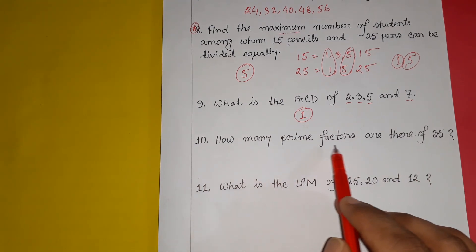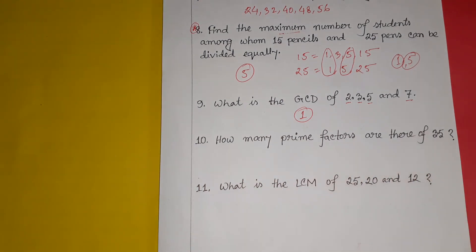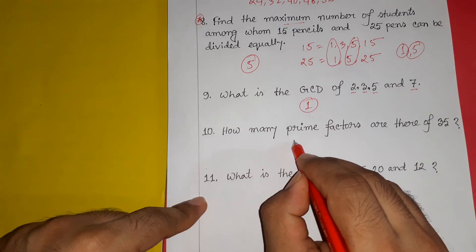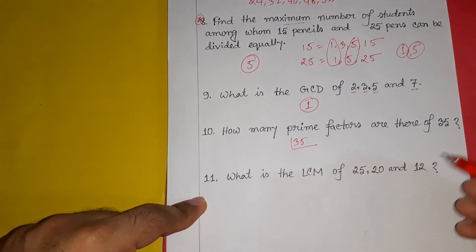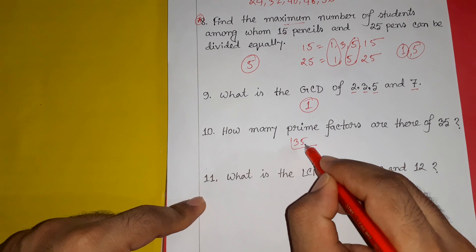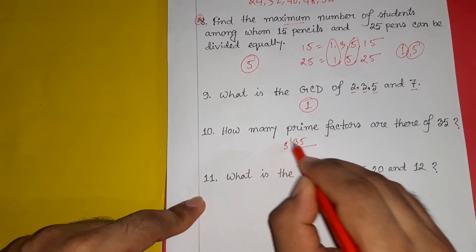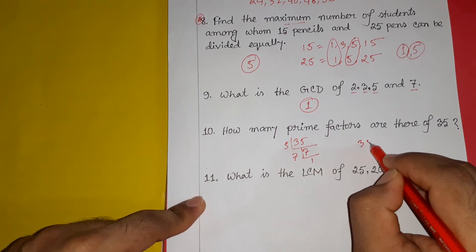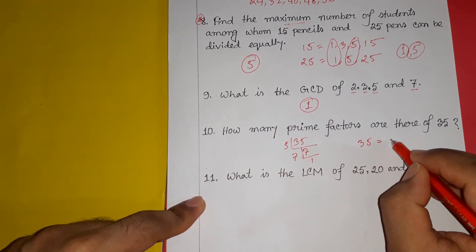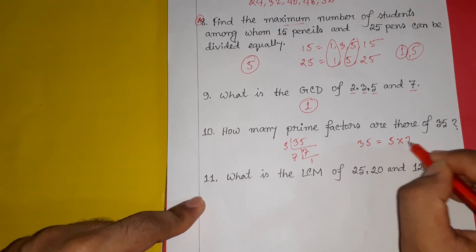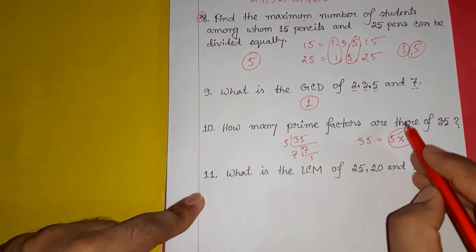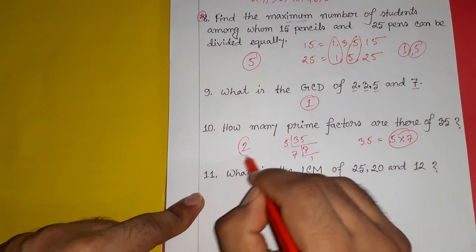Question number 10: how many prime factors are there of 35? We analyze 35: it is not divisible by 2 or 3, but 5 divides 35 to give 7. So 35 equals 5 multiplied by 7. Therefore 35 has 2 prime factors. The answer is 2.